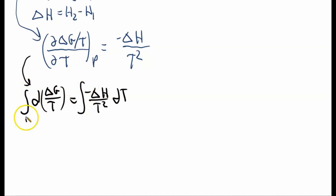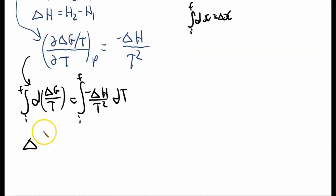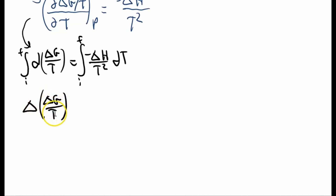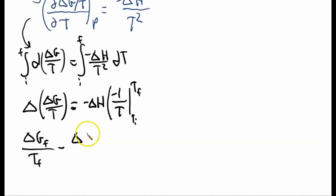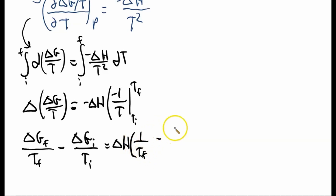We take the integral of both sides from initial to final values. The left side integrates like d(X) to give delta X — so this becomes delta of (delta G over T), the change in Gibbs free energy over temperature. On the right, we assume delta H is constant, and the integral of 1 over T squared is negative 1 over T, evaluated from initial to final temperature. Expanding: delta G at final temperature over final temperature, minus delta G at initial temperature over initial temperature, equals delta H times 1 over final temperature minus 1 over initial temperature.